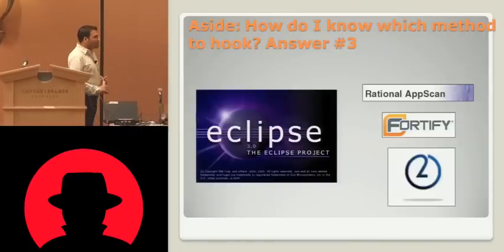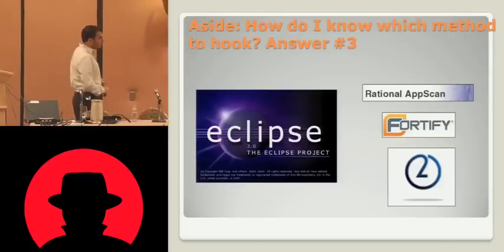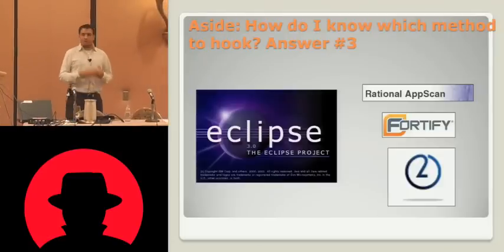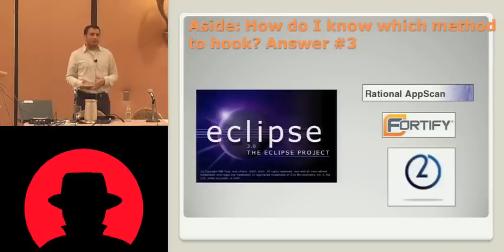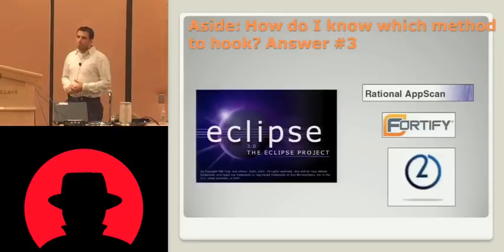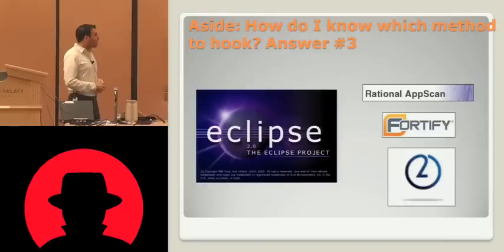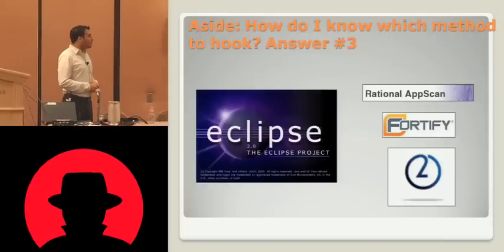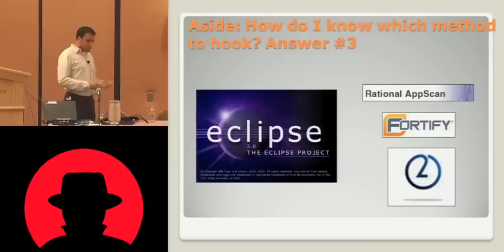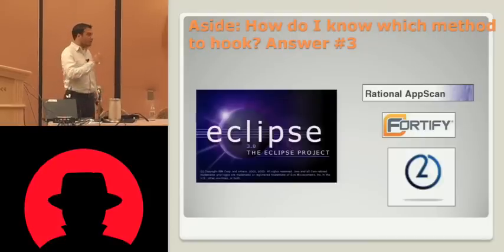Answer number three for how to know which methods to hook: there are always the hard ways. You could decompile the code into an IDE and look through it, or maybe get a static analysis tool to help find something of interest. There's no substitute for just looking through the code — even if the code doesn't compile perfectly, having the decompiled code there to look through is always going to be helpful.